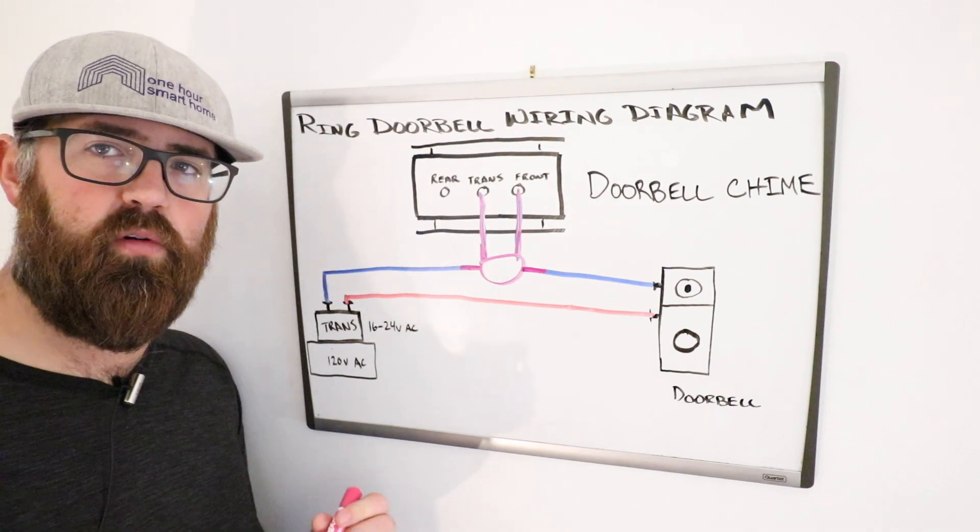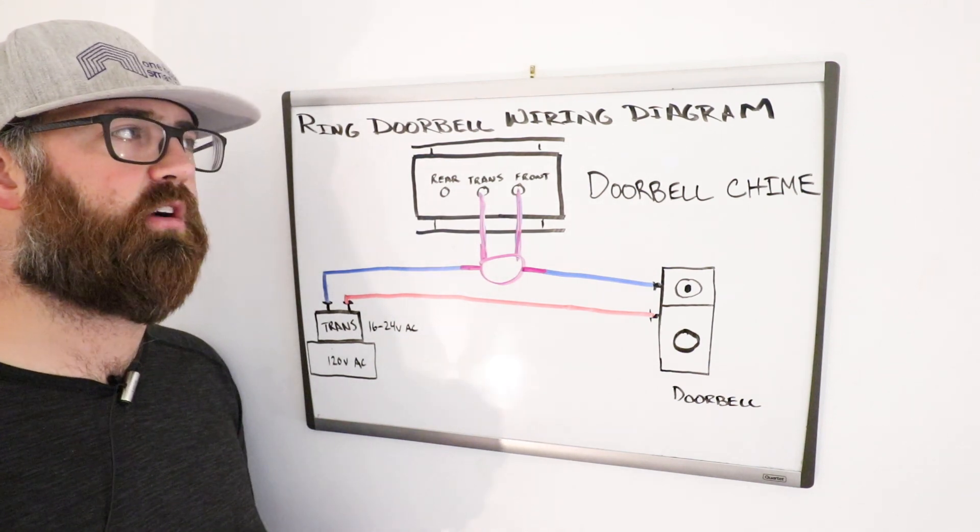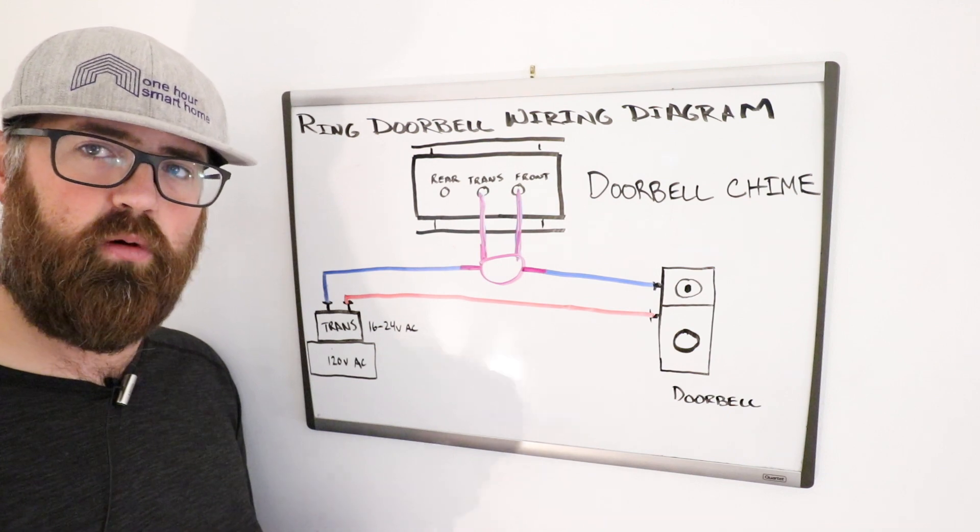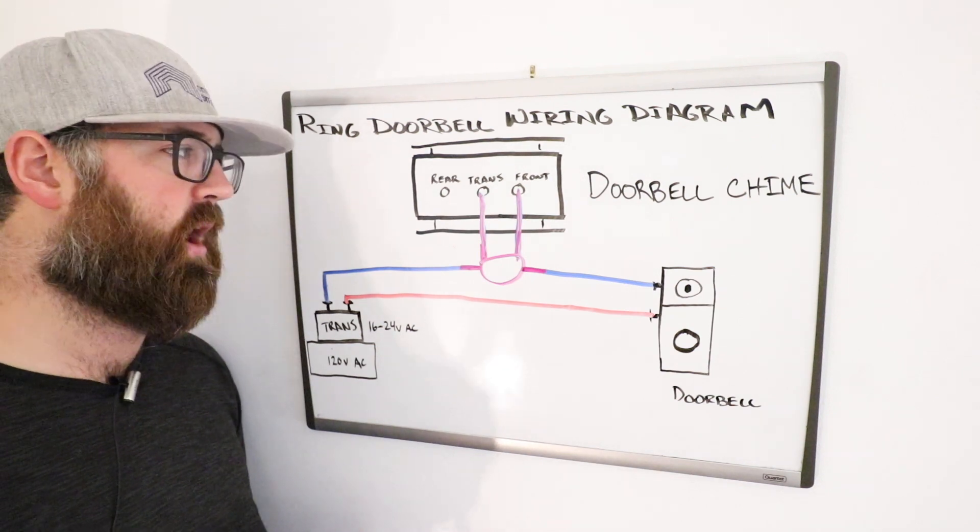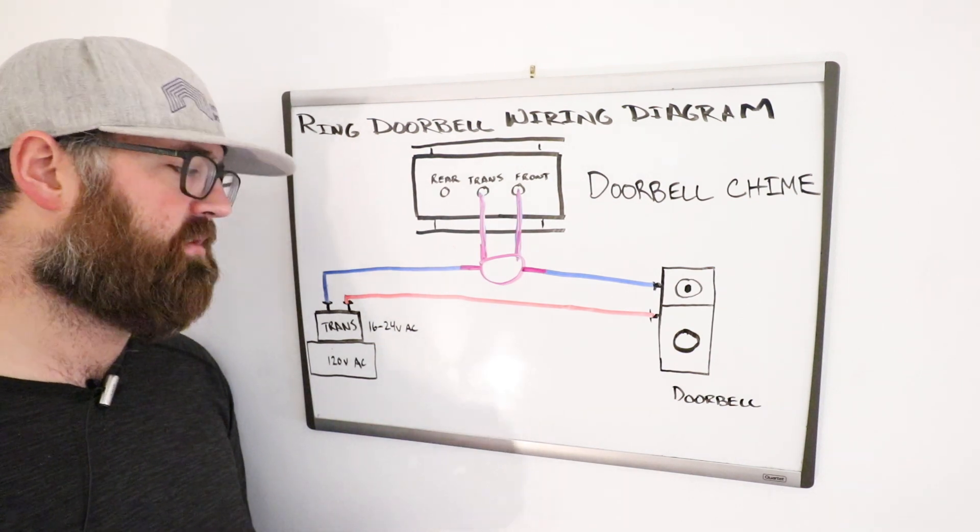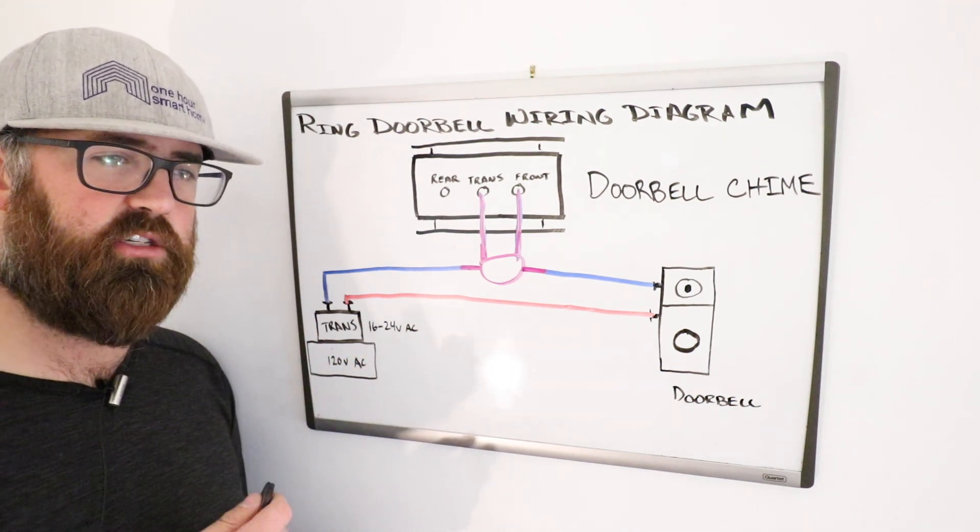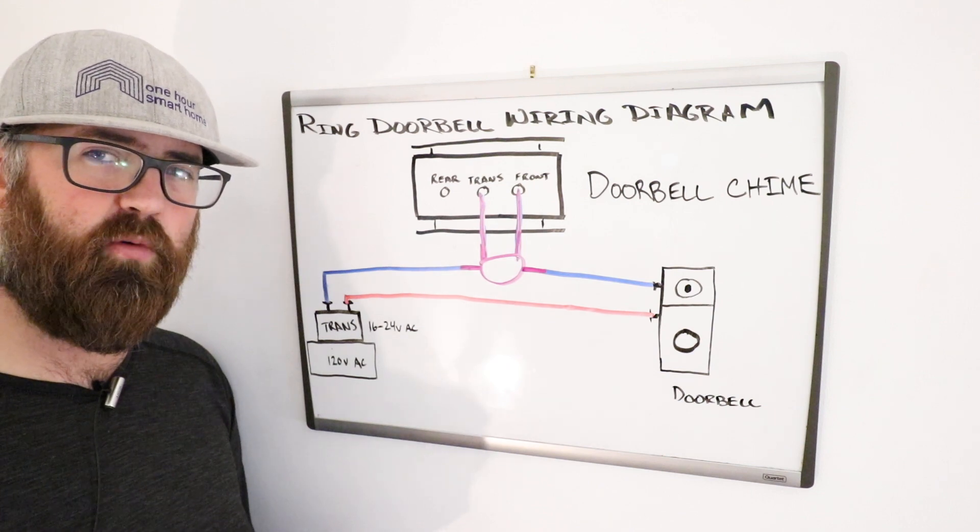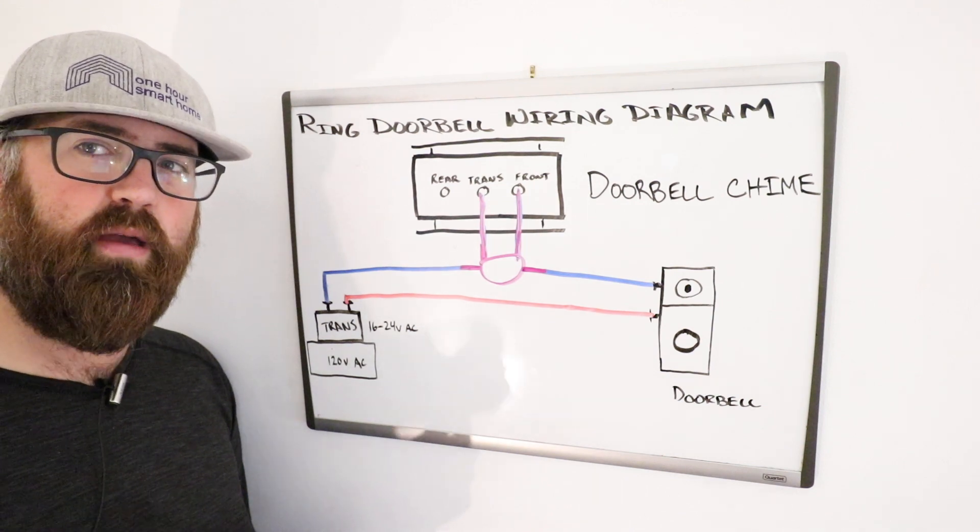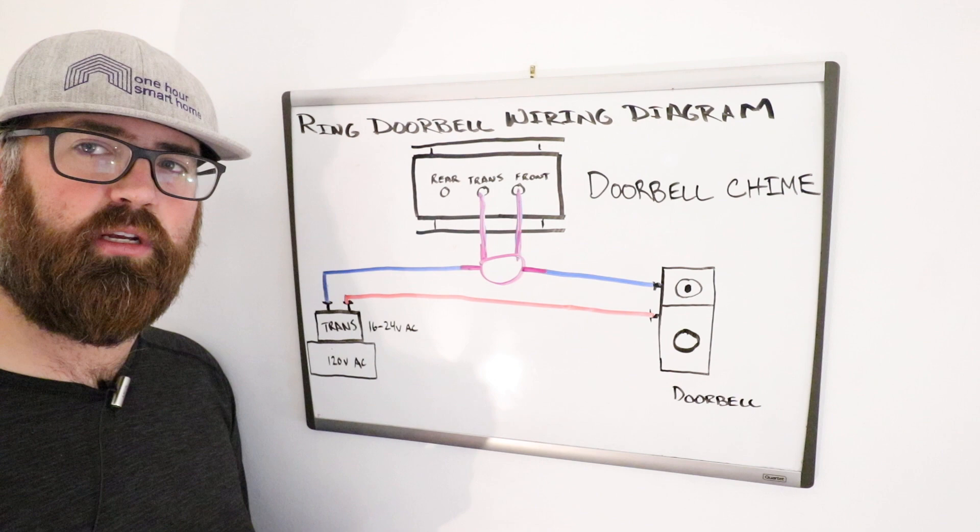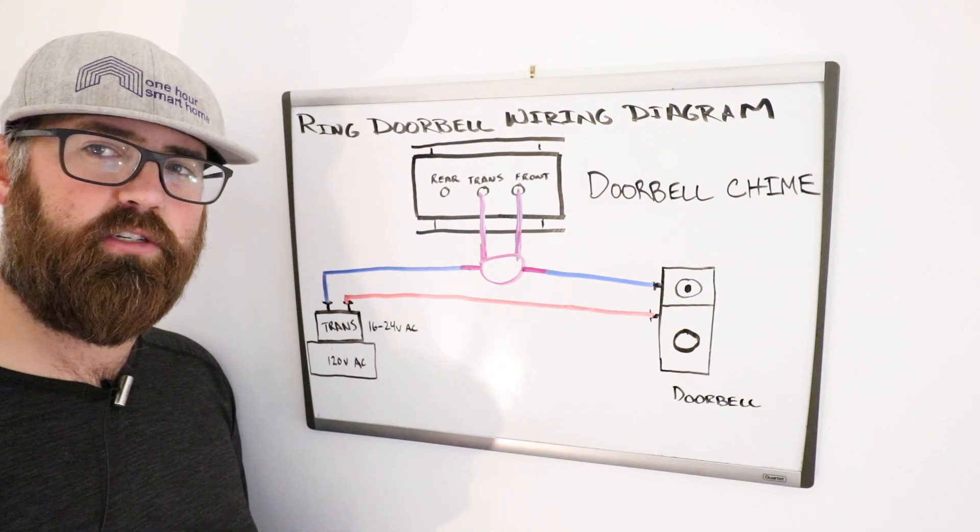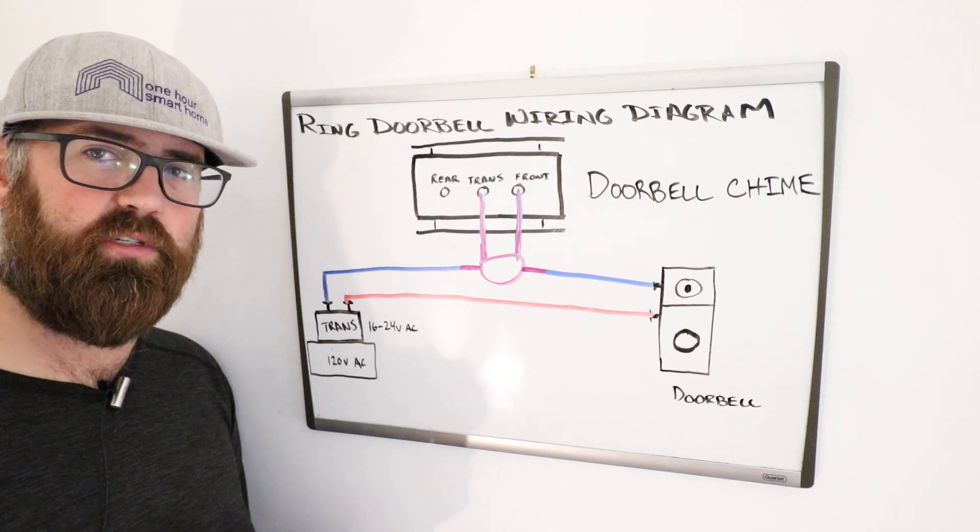And that is the wiring diagram for a ring doorbell. So we hope you enjoyed this video. Very simple to install these. If you're having issues, check your transformer first. We also have a video that tells you how to check your transformer voltage with a multimeter. So that's always a good idea before you get started. So thanks for watching. Please subscribe to the channel and like if this video was helpful for you.